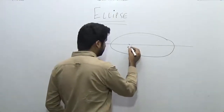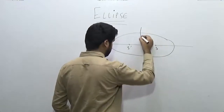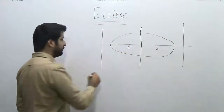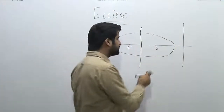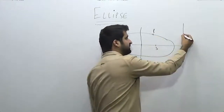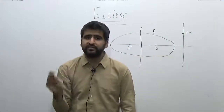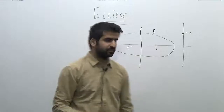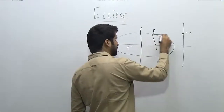This is the first focus, this is the second focus, and this is the center. This is the moving point. The definition of an ellipse says that its distance from the fixed point and the distance from the fixed line are in a ratio, and this ratio is always equal to the eccentricity, which is less than one.